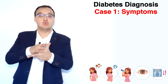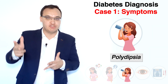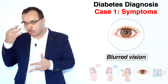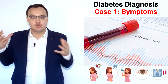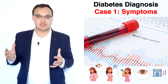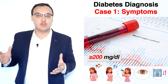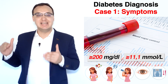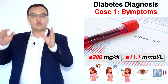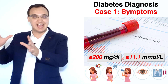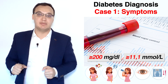The first case is with symptoms — polyphagia, polyuria, polydipsia, blurred vision, weight loss, and so on. These symptoms together with a random blood glucose level of more than 200 milligrams per deciliter, or more than 11.1 millimoles per liter, give us a diagnosis of diabetes mellitus.